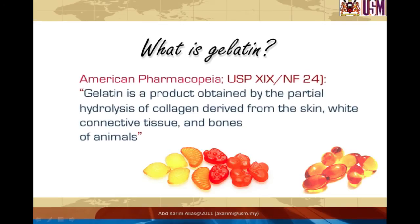Gelatin has been defined as a product obtained by the partial hydrolysis of collagen derived from the skin, white connective tissue, and bones of animals. So we can say that gelatin does not exist naturally in nature — it is a product obtained by hydrolyzing collagen. We will look at the processing to see how we get gelatin from collagen a bit later.